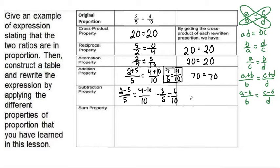Using the cross product property to make sure that these two things are in fact equal, we get 10 times negative 3 is negative 30 is equal to 5 times negative 6 is also negative 30. So that confirms that this subtraction property did in fact work.